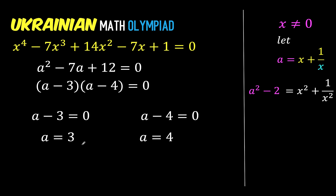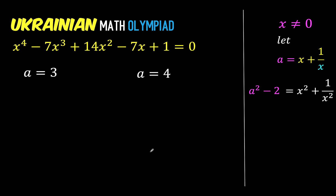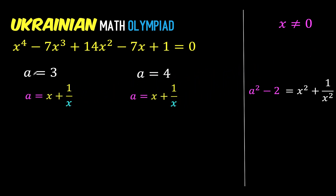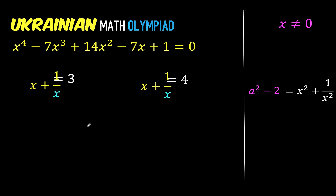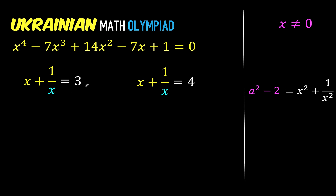But we are not after the value of a — we are solving for x. So we need to do backward substitution. We know that a is equal to x plus 1 over x. Since both values are equal to the same quantities, we now arrive at two equations: x plus 1 over x equals 3, and x plus 1 over x equals 4. The variable x in the denominator can be eliminated by multiplying each term by x.